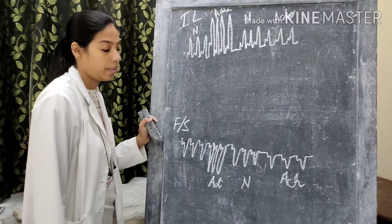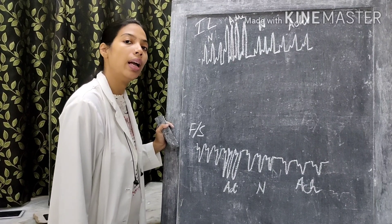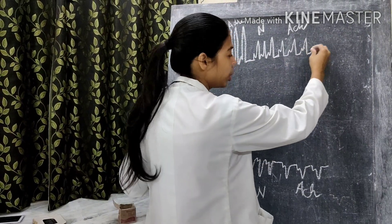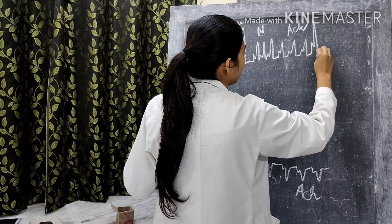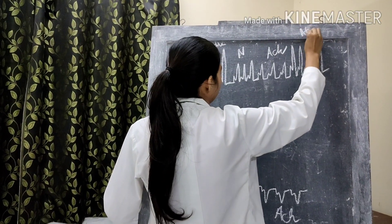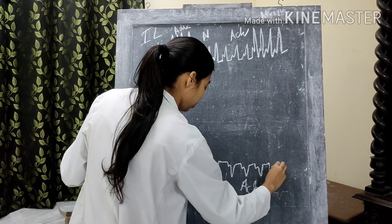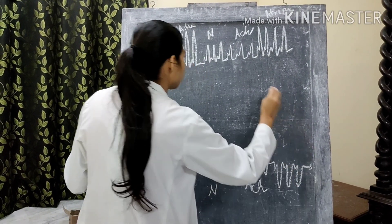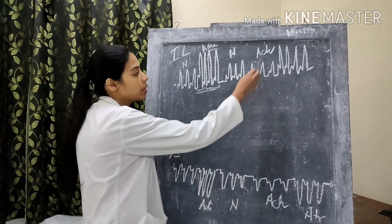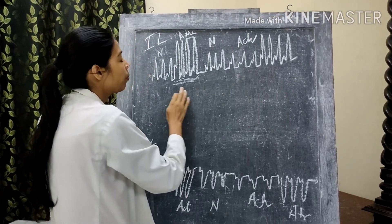After recording the effect of acetylcholine for 2 to 3 beats, we pour 2 drops of atropine. As soon as we pour atropine, we get a change in the cardiogram and we record that recording. After giving acetylcholine, we directly give atropine and we take its effect. Now let's see what the effects are.